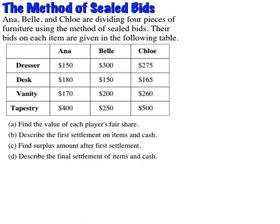This problem has four questions to answer. A: find the value of each player's fair share. B: describe the first settlement on the items with cash. C: determine the amount of surplus after the first settlement. And D: how do we distribute that surplus for a final settlement of items and cash. The table represents how everyone bid in secret, and after they've come to the table together to disclose their bids — opening the envelopes — this is how each player bid on each item.